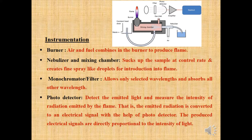Pressurized air is first passed through the nebulizer. The nebulizer sucks the sample at a controlled rate and creates a fine spray of droplets which pass through the mixing chamber. In the mixing chamber, mixing of the sample with LPG gas takes place — LPG gas is supplied from the gas inlet. Next, the mixture is passed through the burner where burning of the mixture takes place.